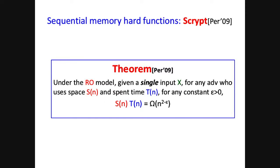Generally, Percival proves that under the random oracle model—where we treat function H as a random oracle—for any adversary who uses space S(N) and time P(N), and for any constant ε > 0, the size-time complexity is Ω(N^(2−ε)). In each step the adversary can query a bounded number of H inputs in parallel. So this is a sequential memory hard function.